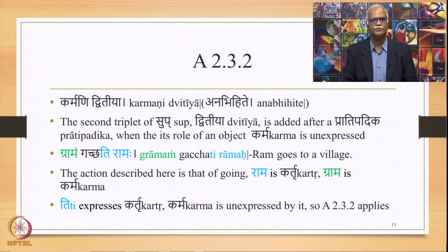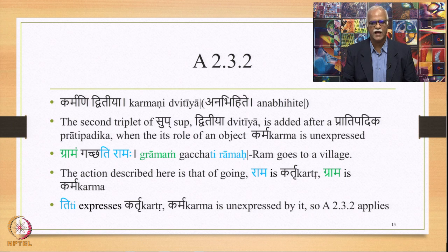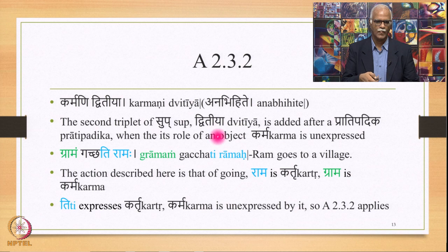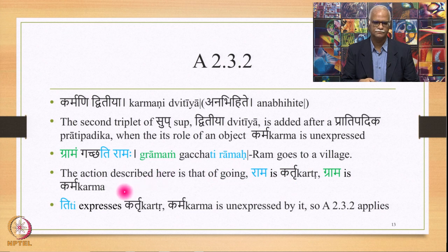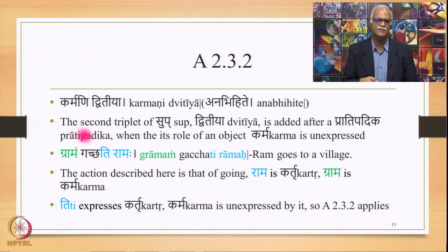Sutra 2.3.2: 'Karmani dvitiya,' with Anabhihite continuing. When Karma is unexpressed, the second triplet of Sup, namely Dvitiya, is added after a Pratipatika when its role as an object is unexpressed. Example: 'gramam gachati ramaha.' Here Ti expresses Kartha; Rama is the Kartha; Grama is the Karma. Ti expresses Kartha, so Karma is unexpressed — Anabhihite — and therefore 2.3.2 applies, and we add the second Sub-triplet to make it Gramam.